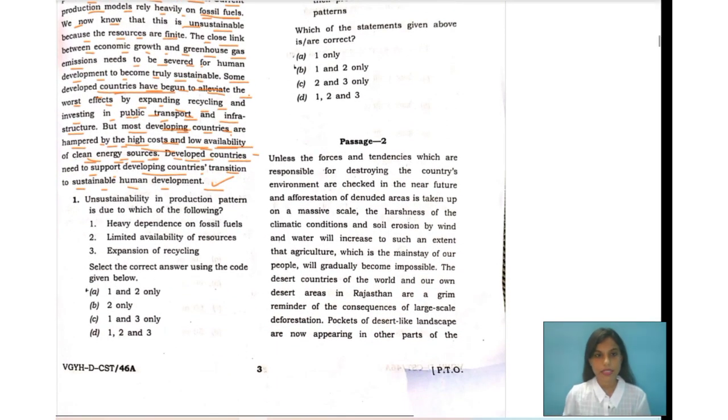Question number one says: unsustainability in production pattern is due to the following. You have read the passage, right? They have talked about heavy dependence on fossil fuels and limited availability of resources. They have talked about only number one and two in the passage, so one and two only is the answer.